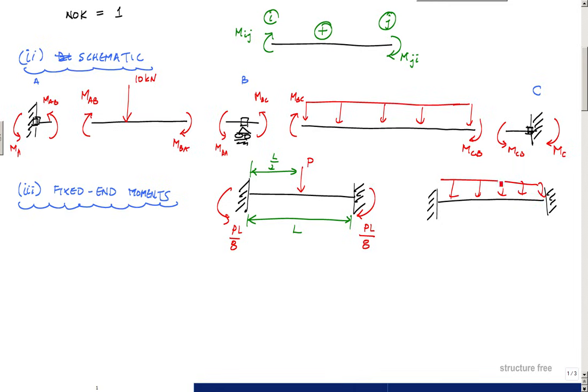You might see a fixed-fixed beam with a uniformly distributed load. Here this is L right here, and this moment right here is WL squared over 12, L squared over 12 on each side.